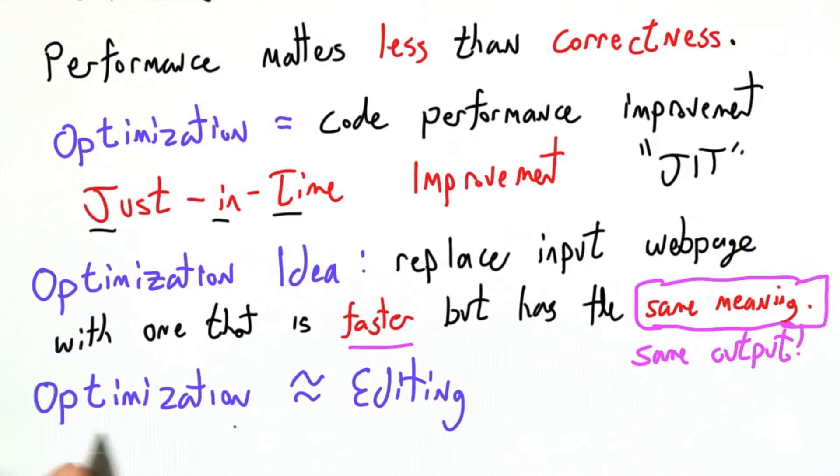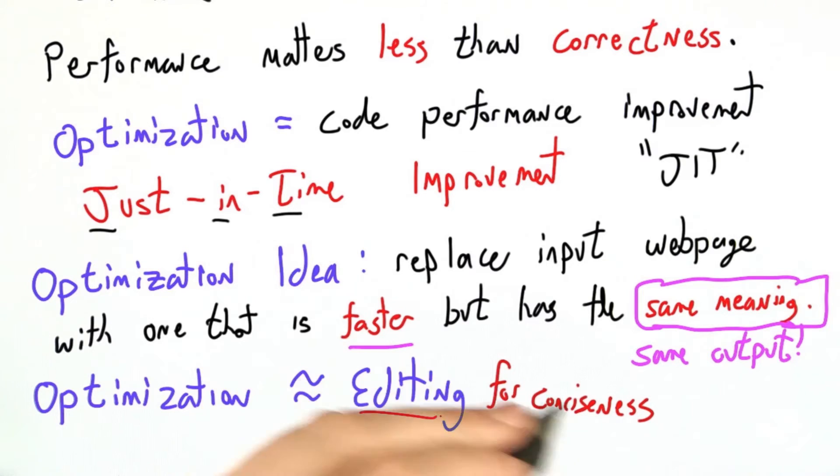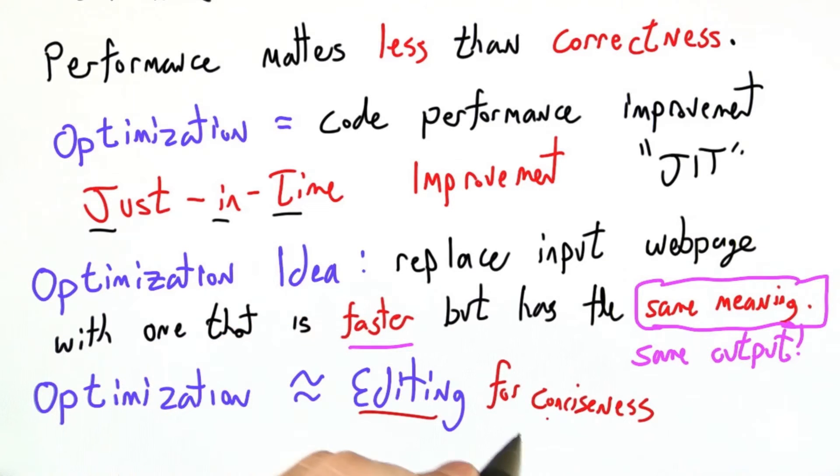And in that sense, optimization for programming languages is somewhat similar to editing for conciseness in natural languages. If you say something redundant, and it's possible to remove that redundancy without changing the meaning, you can strike it from written text. We're going to do the same thing with optimization.